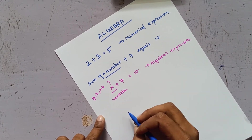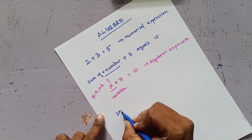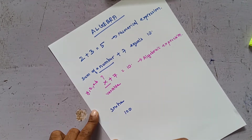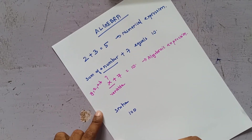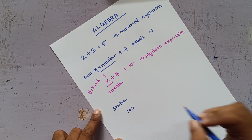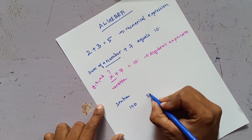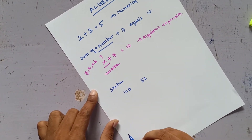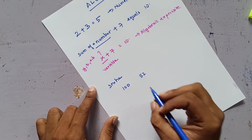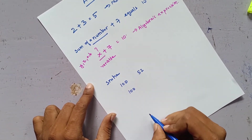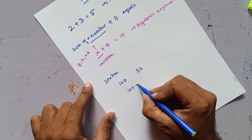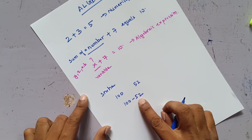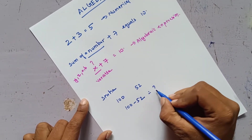Now let's look at some examples. There is a student called Sneha, and her mother gave her 100 rupees and asked her to buy 1 kg of sugar. The shopkeeper returned 52 rupees after the purchase. What will be the cost of 1 kg of sugar? She had 100 rupees in total, and the shopkeeper returned 52 rupees.